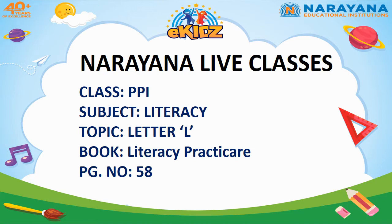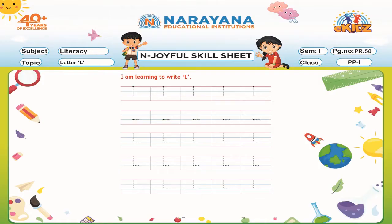Come on, children, open your literacy practice book, page number 58. Children, it is very easy to trace letter L, isn't it? A standing line followed by a sleeping line makes the letter L.